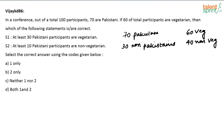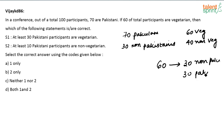Which of the following statements are correct? Statement one: at least 30 Pakistani participants are vegetarian. How many non-Pakistanis are there? 30 non-Pakistanis. Let us assume maximum — all 30 non-Pakistanis are vegetarians. If all the non-Pakistanis are vegetarians, then at least the remaining 30 must be Pakistani vegetarians. There are totally 60 vegetarians, so maximum 30 of them can be non-Pakistanis, and the remaining 30 will be Pakistanis.